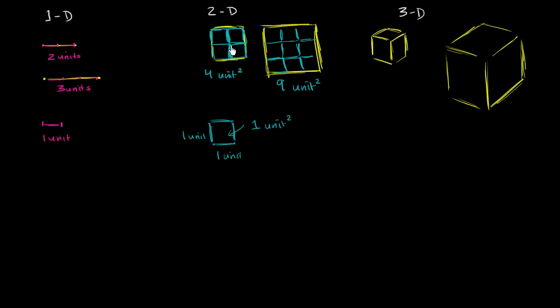volume is just how much space something takes up in three dimensions. Area is how much space something takes up in two dimensions. Length is how much space something takes up in one dimension. But when we think about space, we're normally thinking about three dimensions. So how much space would you take up in the world that we live in?